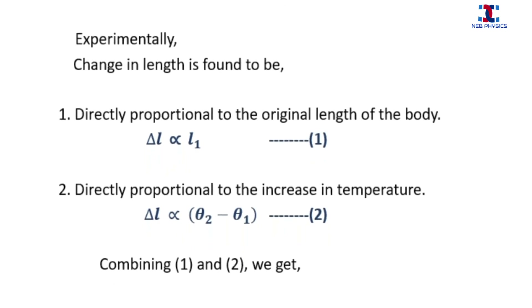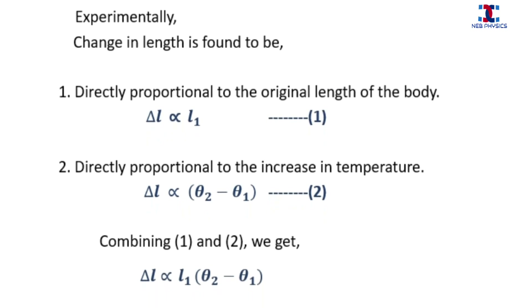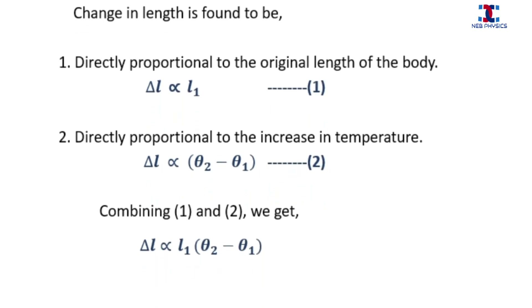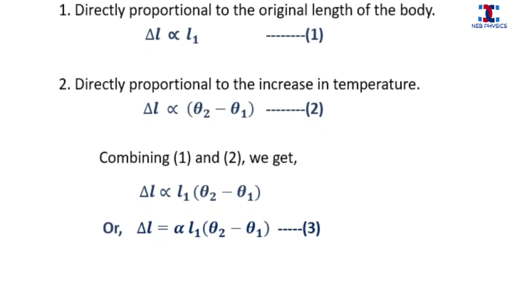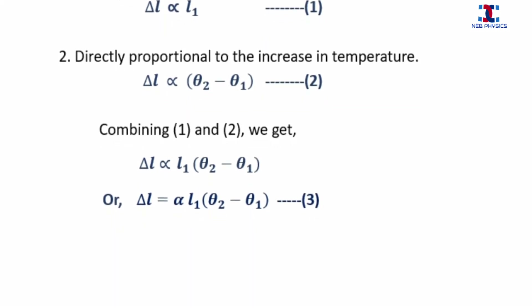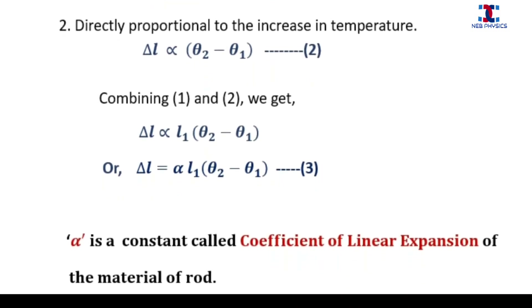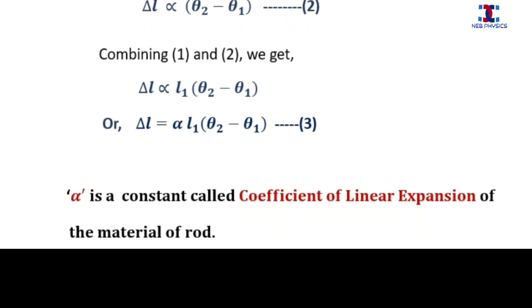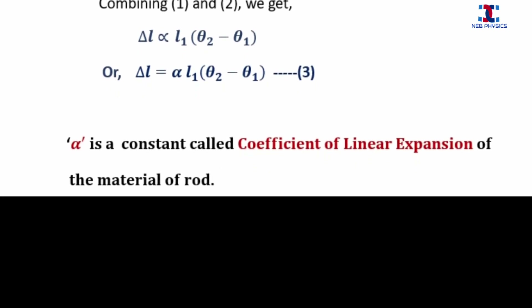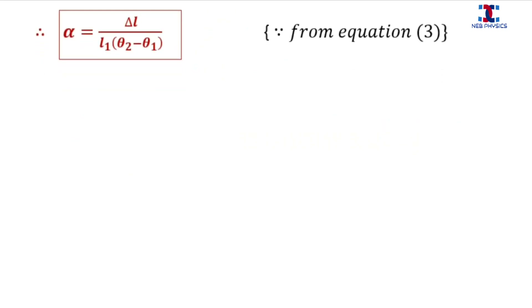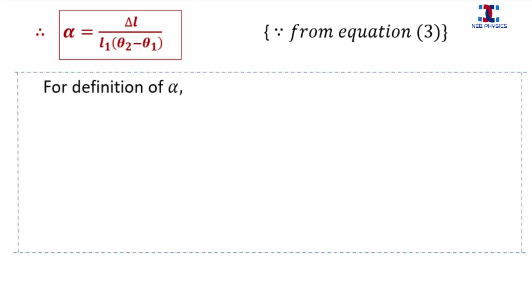Combining equations 1 and 2, we get ΔL ∝ L₁(θ₂ − θ₁). Using a proportionality constant, this becomes ΔL = α · L₁ · (θ₂ − θ₁) — let this be equation 3. Here, α is the proportionality constant called the coefficient of linear expansion of the material. Rearranging equation 3, we get α = ΔL / [L₁ · (θ₂ − θ₁)], which is the final expression for the coefficient of linear expansion.